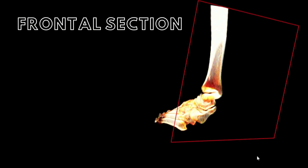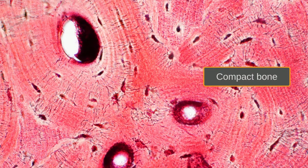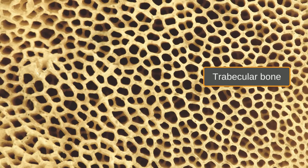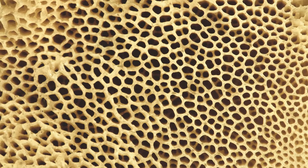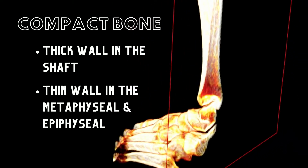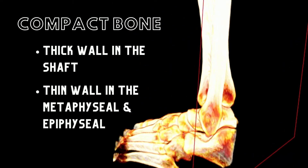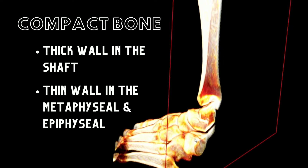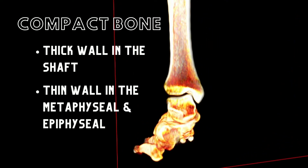If a frontal section is made of a long bone, we can see the compact or cortical bone and trabecular bone, also known as cancellous or spongy bone. The compact bone forms a thick wall of the shaft and a thin wall of the metaphyseal and epiphyseal segments of bone. Compact bone is located where the stress comes from only one or very few directions, like in the shaft.